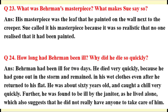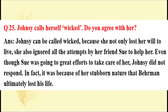Question 24: How long had Behrman been ill? Why did he die so quickly? Answer: He died very quickly because he had gone out in the storm and remained in his wet clothes even after he returned to his flat. He was about 60 years old and caught a chill very quickly. Further, he was found ill by the janitor as he lived alone, which suggests he did not really have anyone to take care of him.